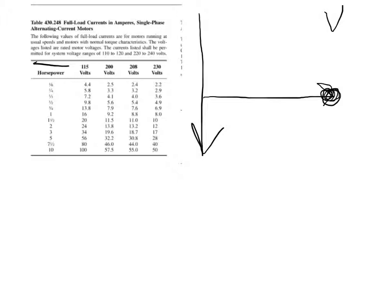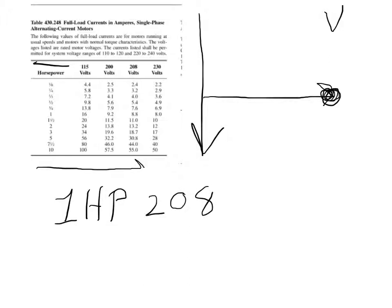For this example, let's say a 1 horsepower motor at 208 volts. We go across to the 208-volt column at the 1 horsepower row, and we find a current value of 8.8 amps for that particular motor.